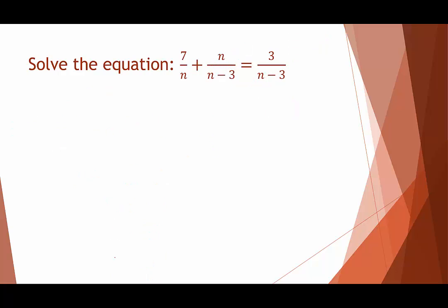In our next example, we don't need to factor. The restrictions: n cannot equal 0, and n minus 3 cannot equal 0, so n cannot equal 3. We note both restrictions. The least common denominator is n times (n minus 3).